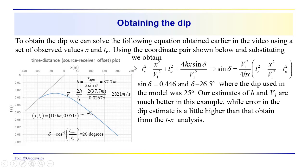Getting the dip here, we have to actually pick a coordinate pair. I picked a coordinate pair here: X 100 meters, T 0.051 seconds. And just substitute it into this relationship here and solve for sine of delta. When we do that, we get a dip of 26.5 degrees.